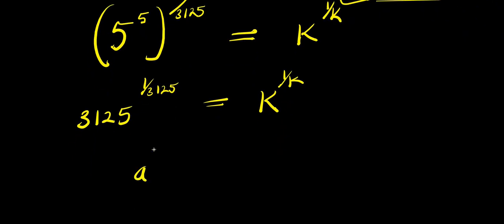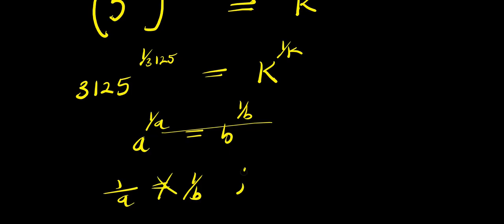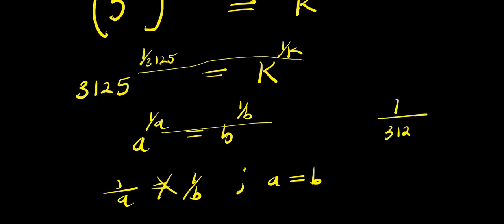Now, if you have a to the power 1 over k equals b to the power 1 over k, we can cross multiply — or we can just equate the exponents. If 1 over a equals 1 over b, cross multiplying gives a equals b. So comparing the exponents here, 1 over 31/5 equals 1 over k. Cross multiplying, that means k equals 31/5.